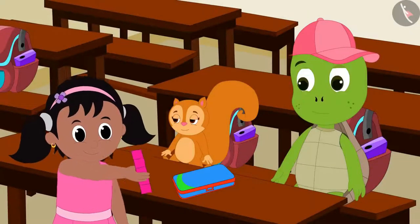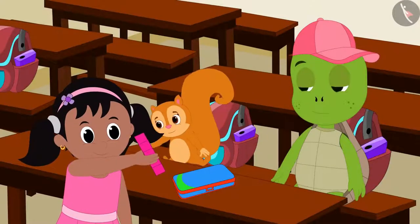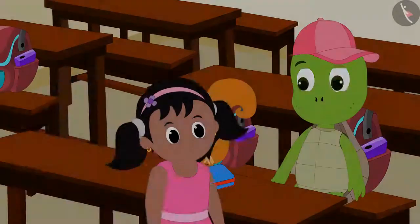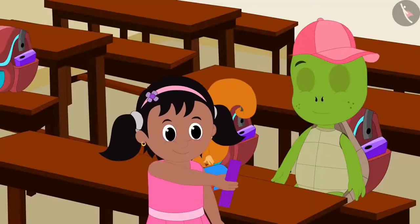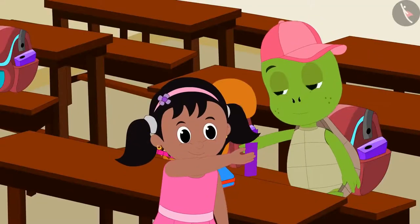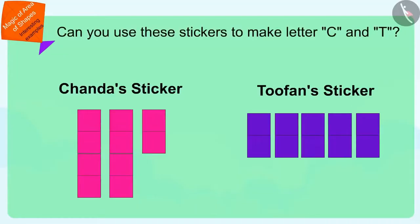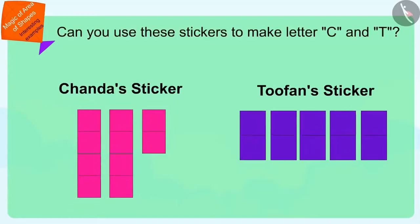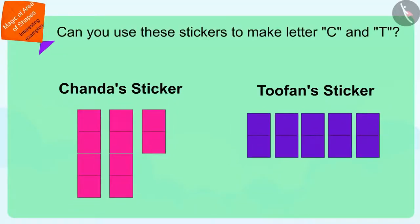Pinky gave 10 stickers each to both Chanda and Tufan to make their own letters. Children, can you use these 10 square-shaped stickers to make Chanda's name letter C and Tufan's name letter T? If you want, you can find a solution by stopping the video.